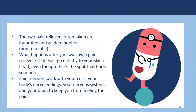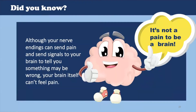Analgesics include paracetamol, the non-steroidal anti-inflammatory drugs such as salicylates, or opioid drugs like morphine and oxycodone. These pain relievers work with your cells, your body's nerve endings, the nociceptors, your entire nervous system and your brain just to keep you from feeling pain. Although our nerve endings can sense pain and send signals to our brain, the brain itself cannot feel pain. It's the signals firing that we perceive as pain.